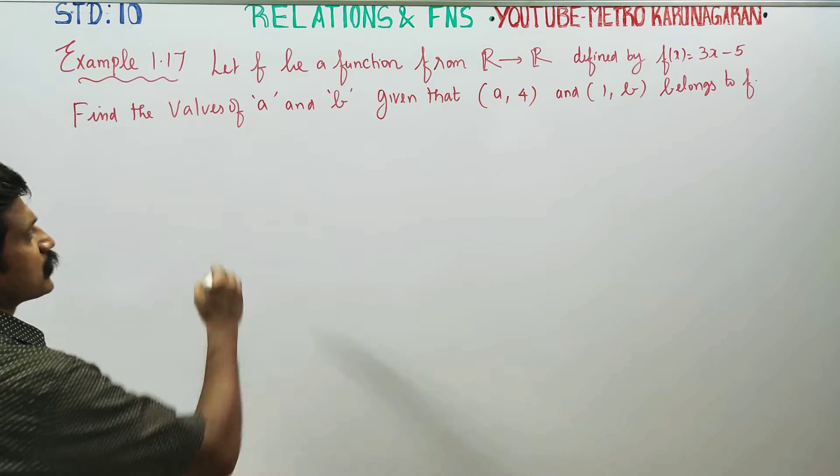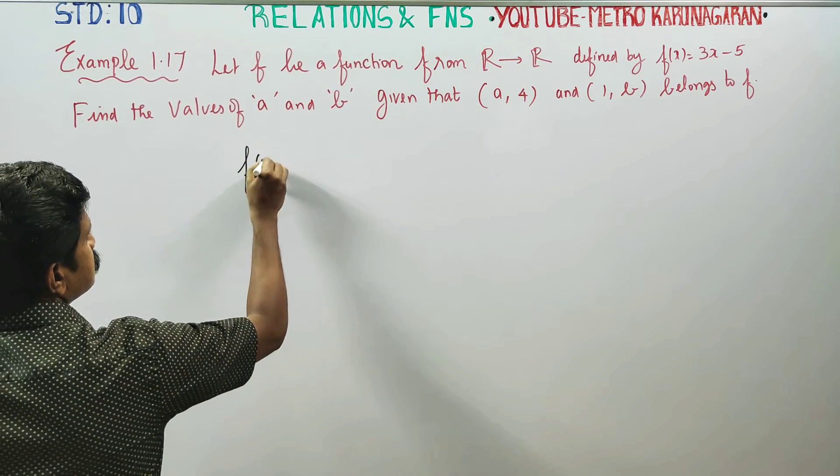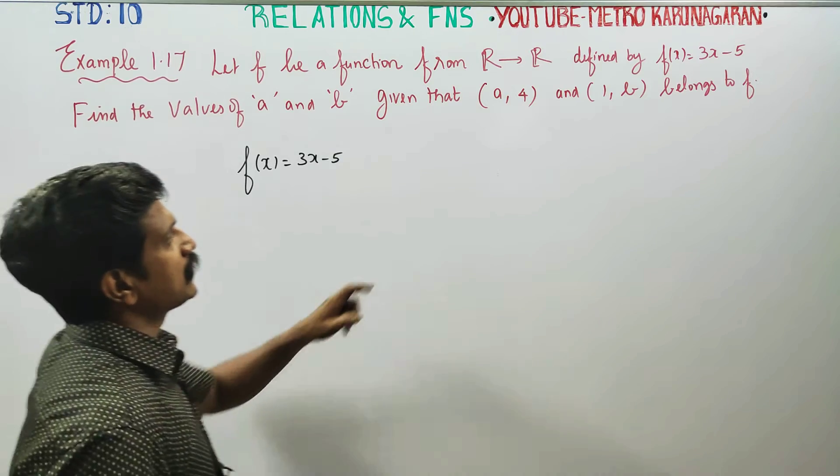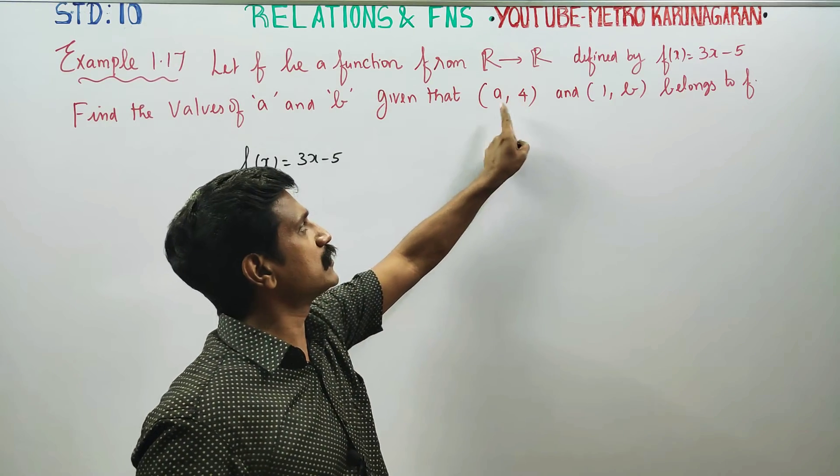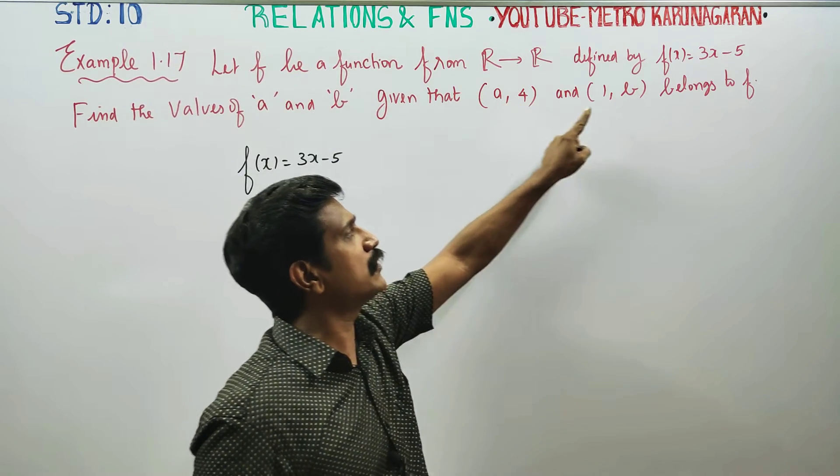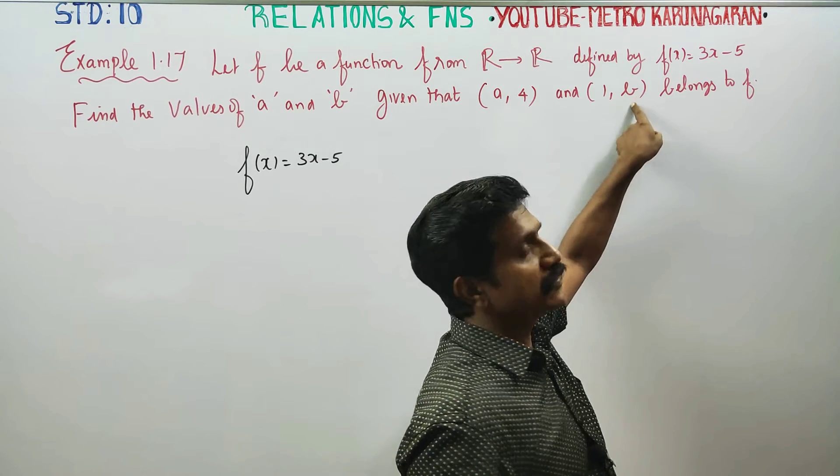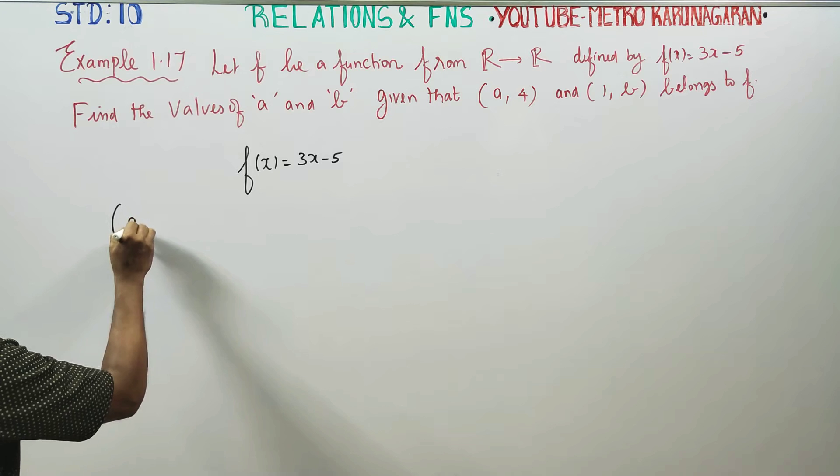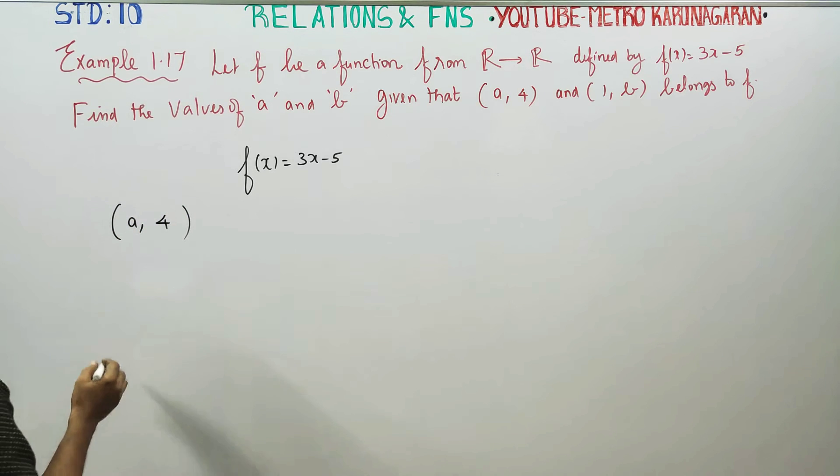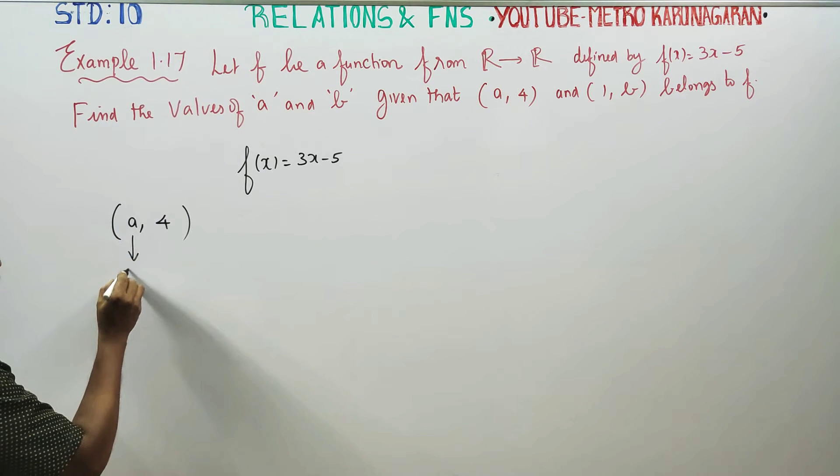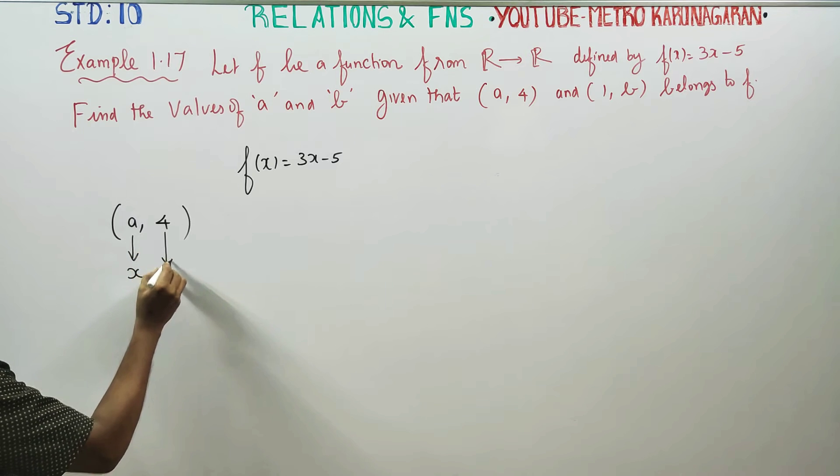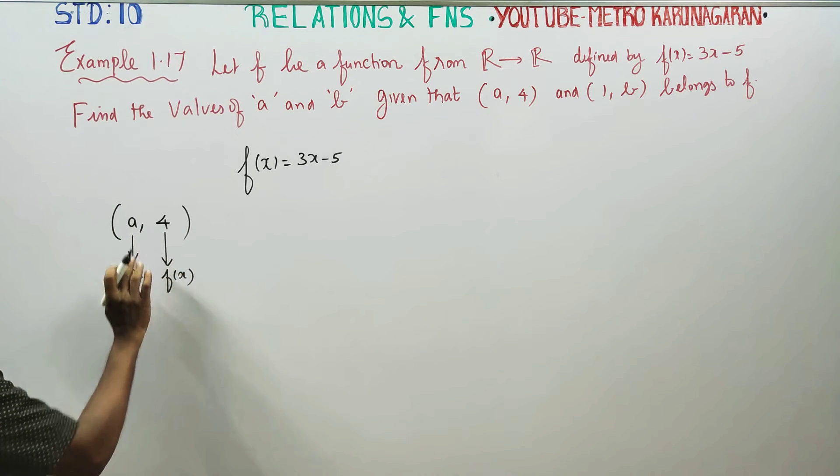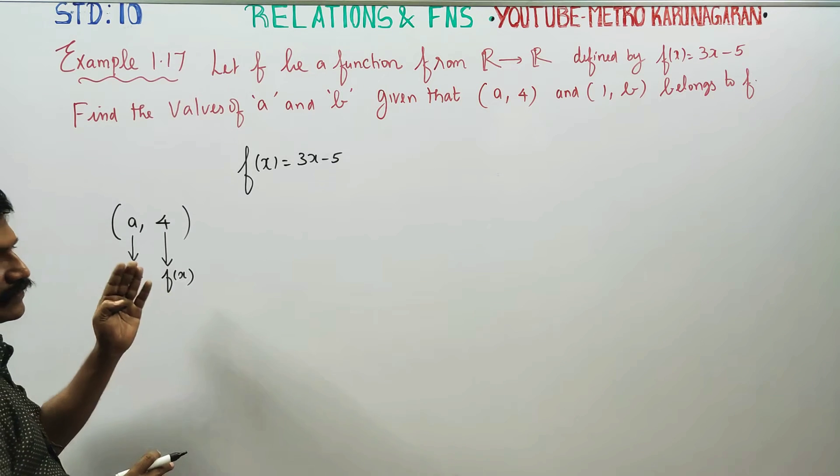The function formula is f(x) = 3x - 5. In this ordered pair, we are going to find the value of B. The first ordered pair is (A, 4). The meaning is this is my x and this is my f(x). In an ordered pair, the first is the element, the second is the image.